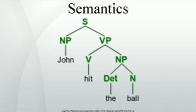Model-theoretic semantics originates from Montague's work. It is a highly formalized theory of natural language semantics in which expressions are assigned denotations—meanings—such as individuals, truth values, or functions from one of these to another. The truth of a sentence, and more interestingly, its logical relation to other sentences, is then evaluated relative to a model.